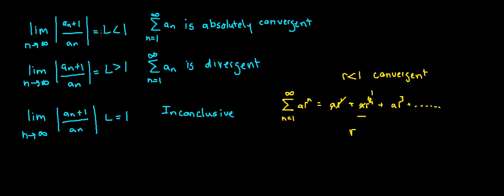If the limit is less than 1, then the sum of A_n is absolutely convergent. If it is greater than 1, it is divergent.